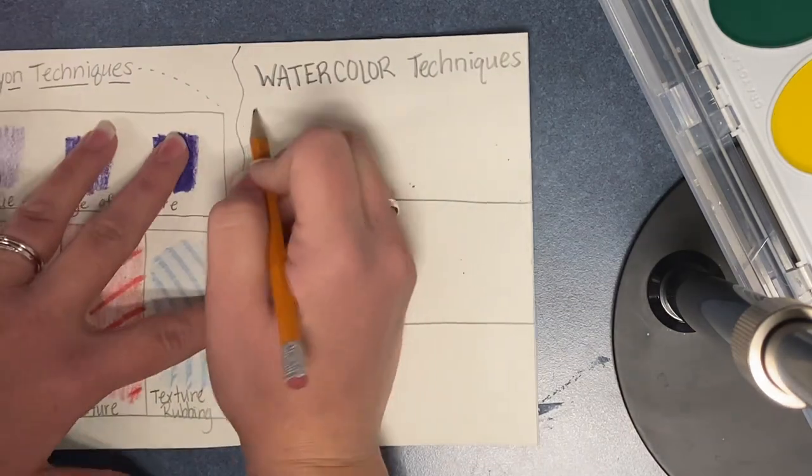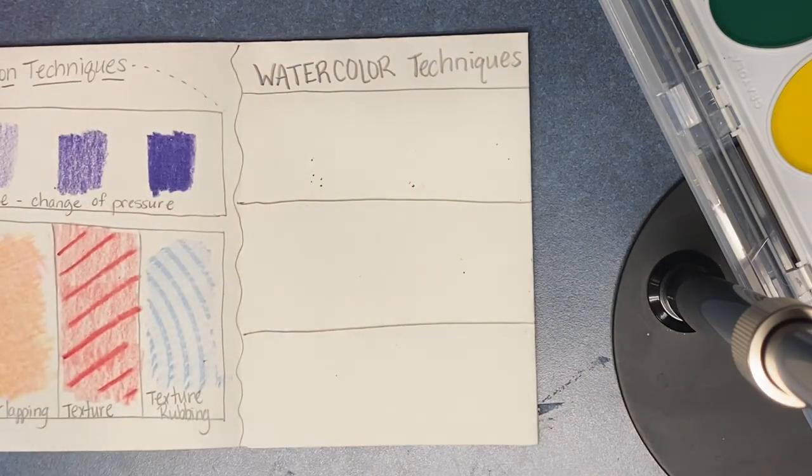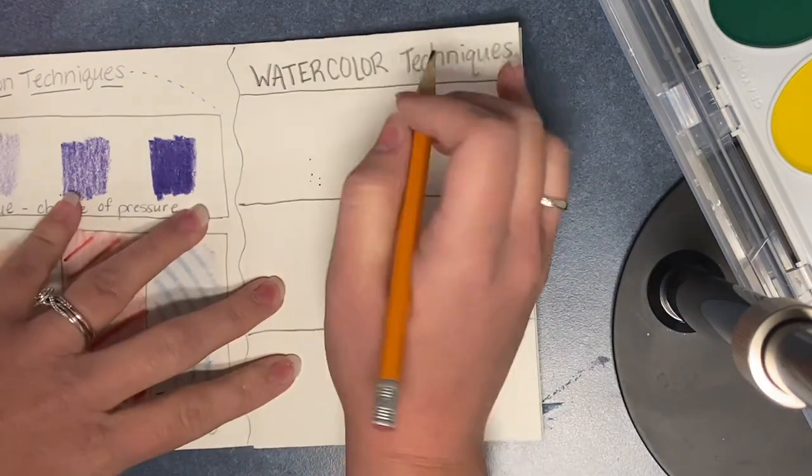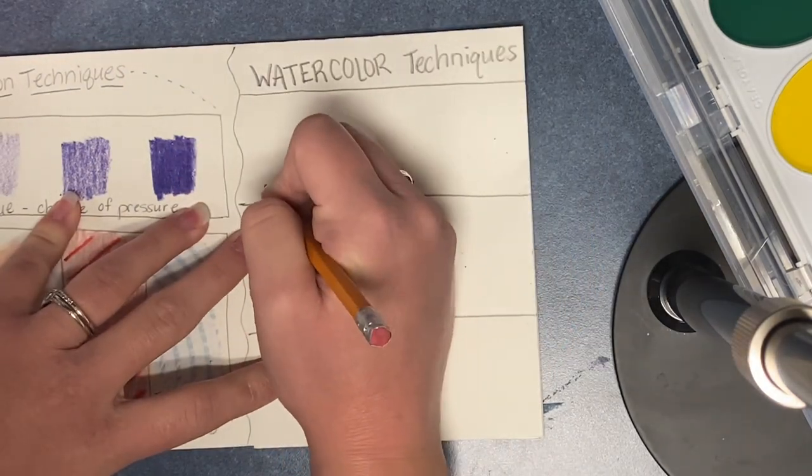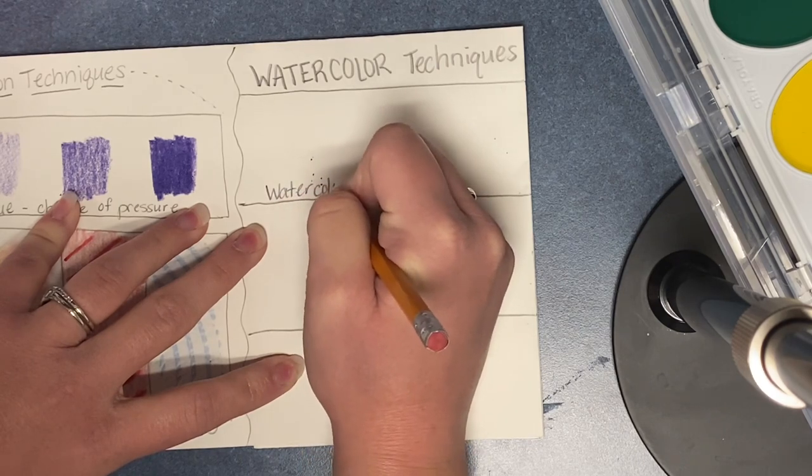The first technique that we will do is a watercolor resist. And that is going to be using the crayons. So we're going to write watercolor resist.